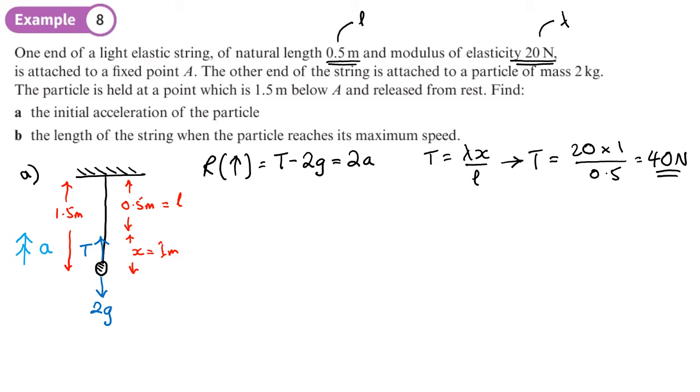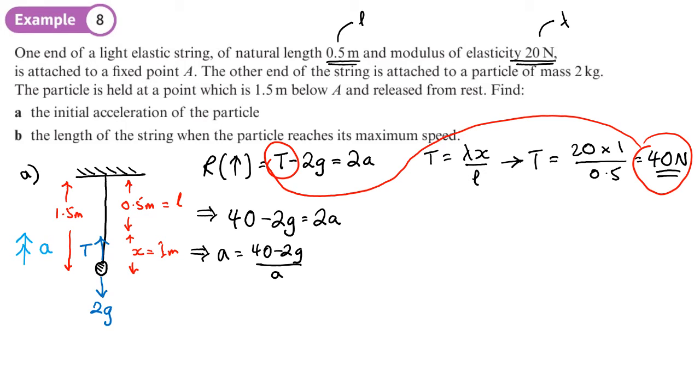That can go back here, now 40 is going to go here, so that will be 40 minus 2g equals 2a. So a equals 40 minus 2g divided by 2.